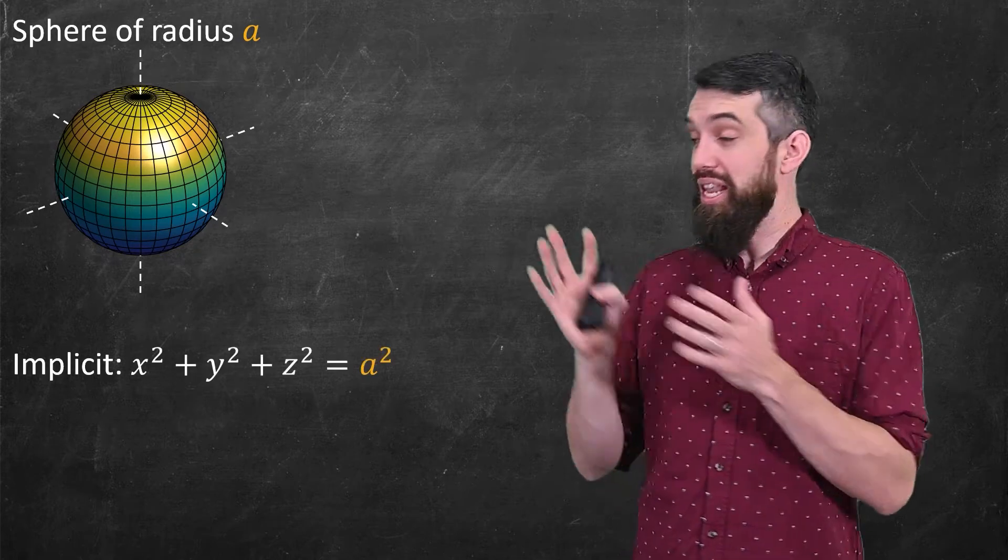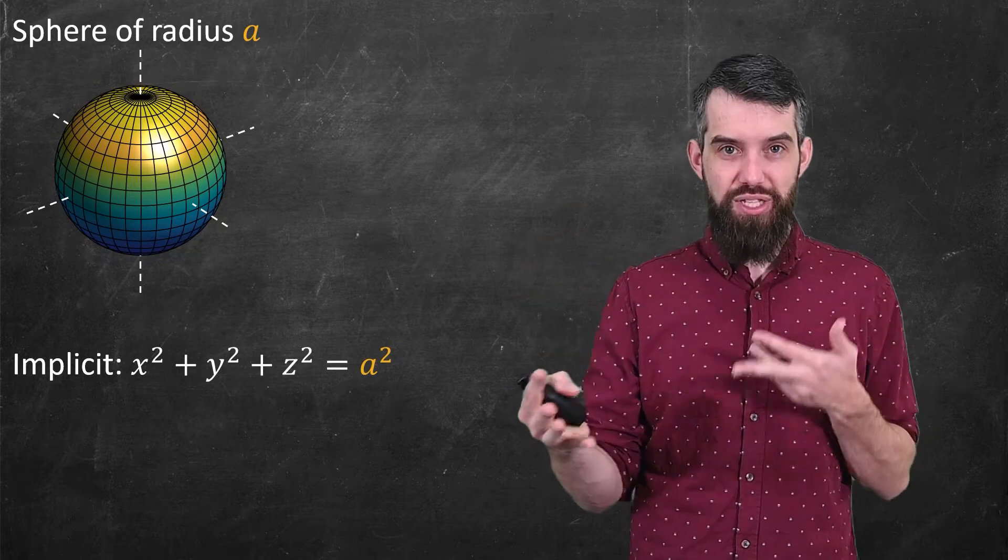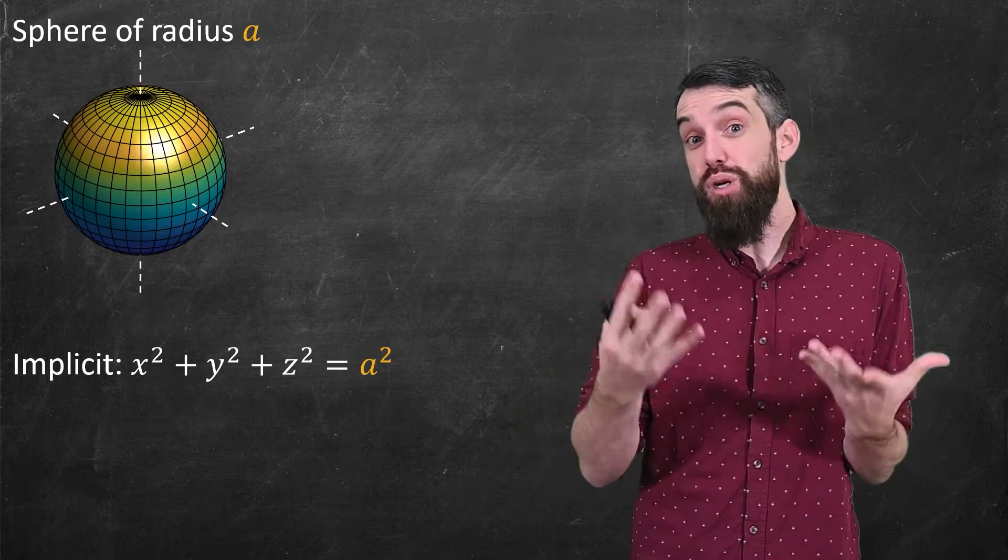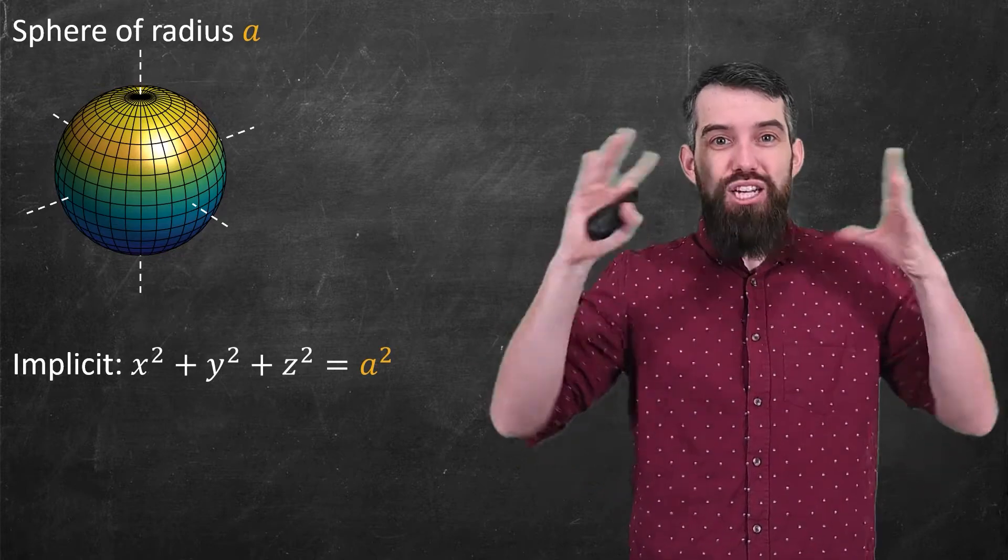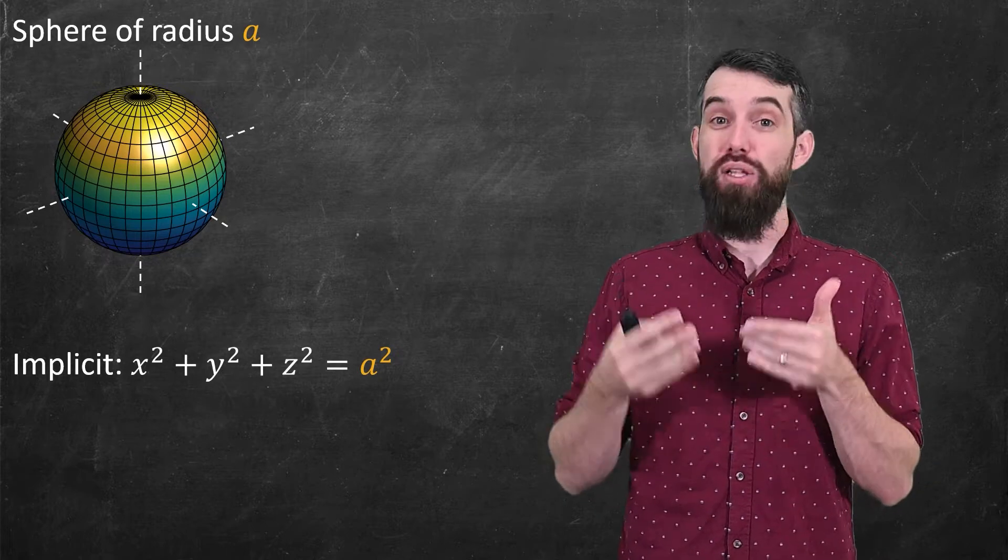Now the sphere has an implicit formula, x² + y² + z² = a². But what we really want to do in this video is to come up with a parametric way to represent the sphere that naturally captures the geometry of the sphere. This is going to make our computations a lot easier.